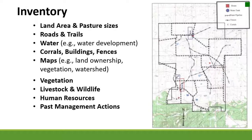You want to document human resources and also any past management actions or past natural disturbances that occurred on your land. For example, a lot of areas in southern Idaho have experienced wildfire. Take an inventory of when that occurs because it's a good indication for what we might find later on.